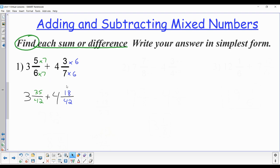Once you have your mixed numbers with a common denominator, you can then start adding. Now the denominator is going to stay the same. And the numerator, I add the numerators: 35 plus 18. 35 plus 18 is 53.